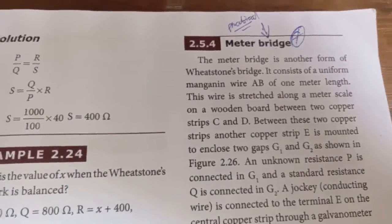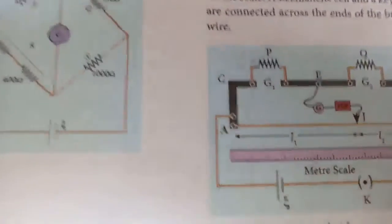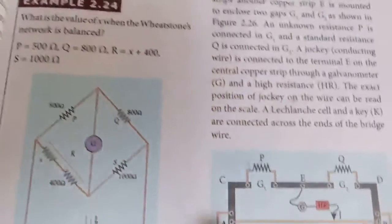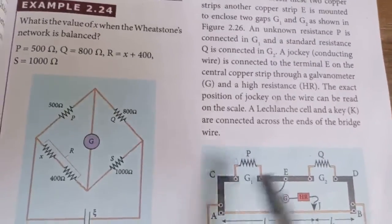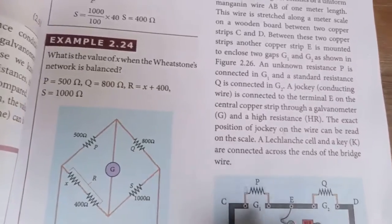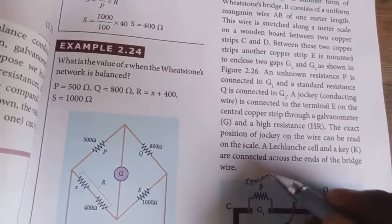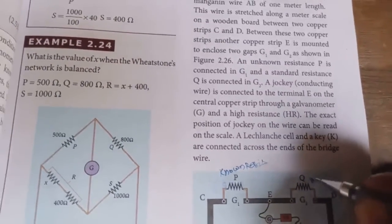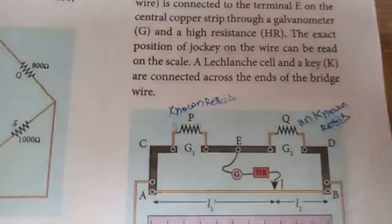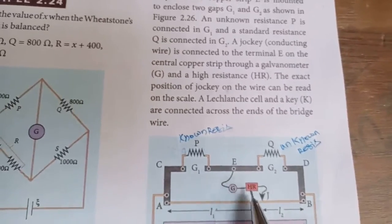The next topic is meter bridge, which is an important practical question. The meter bridge consists of a diagram with one meter of manganine wire. There are two gaps, G1 and G2 — one gap contains a known resistance and the other contains an unknown resistance. The middle point connects to a galvanometer and jockey.